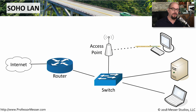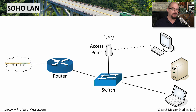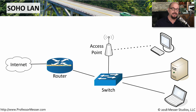From our computer, we may send information over the wireless network that connects to the switch and is ultimately routed out to the internet. That information goes to a server on the internet side and then begins the process of coming back inside our router, to our switch interface, onto the wireless network, and back to our computer.